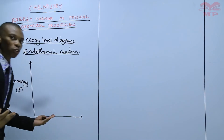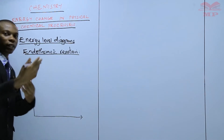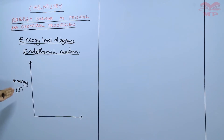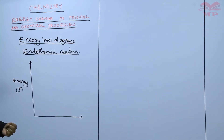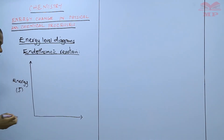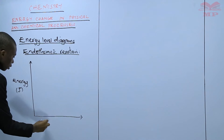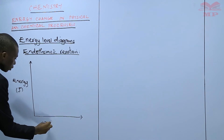Joules can also be converted into kilojoules by dividing the joules by 1000. The energy is on the y-axis. On the x-axis, you have the reaction — the reaction progress.